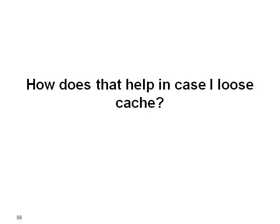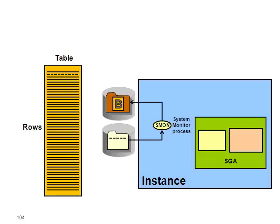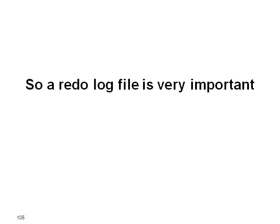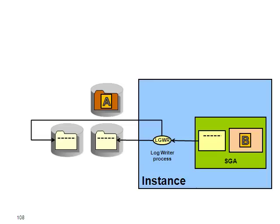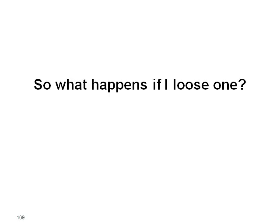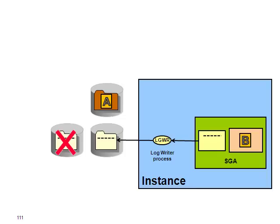How does that help in case you lose the cache? Well, we can always reapply redo entries. In case you lose the cache — so imagine you committed your data and you lose your instance — well the next time you restart your instance there is a special dedicated process called the system monitor that is going to reapply the redo log entries to the data file. A redo log file is very important, and that is why a redo log file should always be mirrored, as illustrated on this diagram. The log writer, whenever it flushes the redo log buffer to the file, duplicates its write to two different redo log files in the same redo log group. So if you lose one, you can always use the remaining one — you still have one redo log file in which you can write.